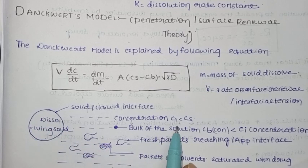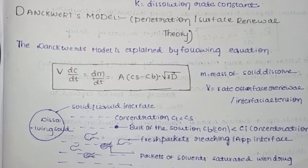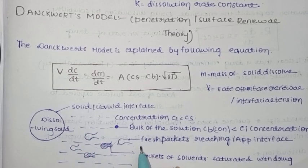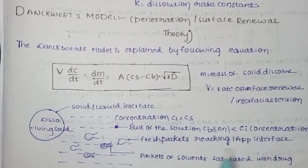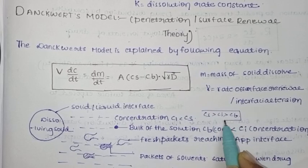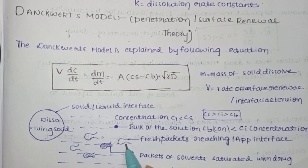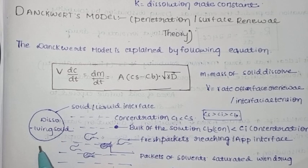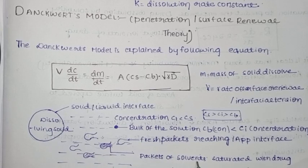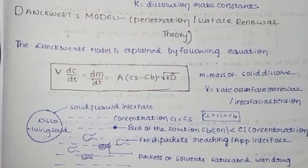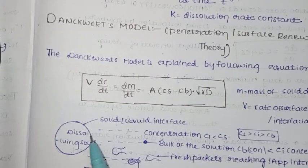CI is the Cs of the drug and is always greater than Cs, while this is the bulk of the solution where Cb concentration is less than CI concentration. Actually, Cs is always greater than CI, and CI is greater than Cb. Fresh packets reach the interfacial tension and collect the drug. The packets of solvent become saturated—completely filled with no gap.